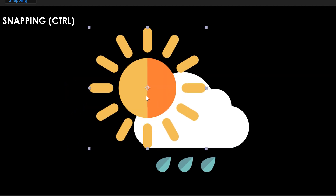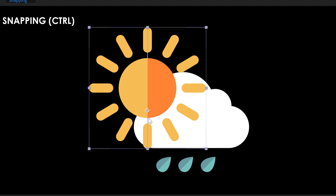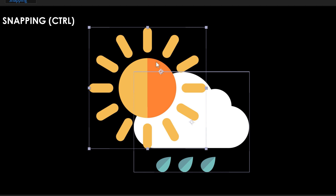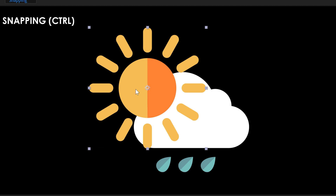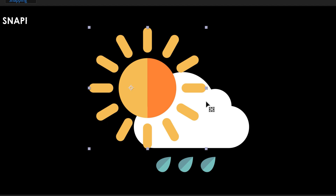And it works with the Pan Behind tool. So I'm going to switch to the Pan Behind tool and grab the anchor point. I hold Control and it's going to snap that anchor point — so you can bring the anchor point to the bottom center, bring it to the right side. It's going to snap straight to the vertical and horizontal axes. Again, incredibly, incredibly useful.